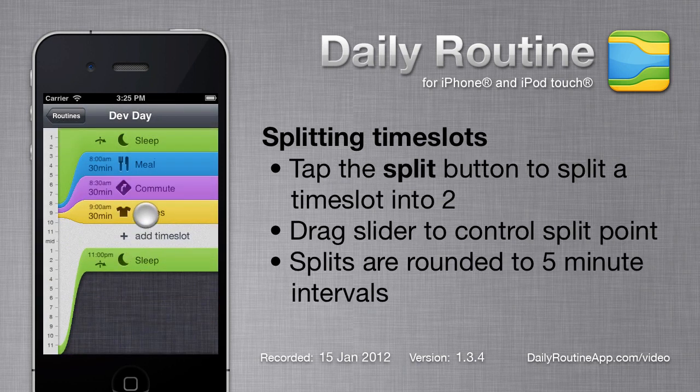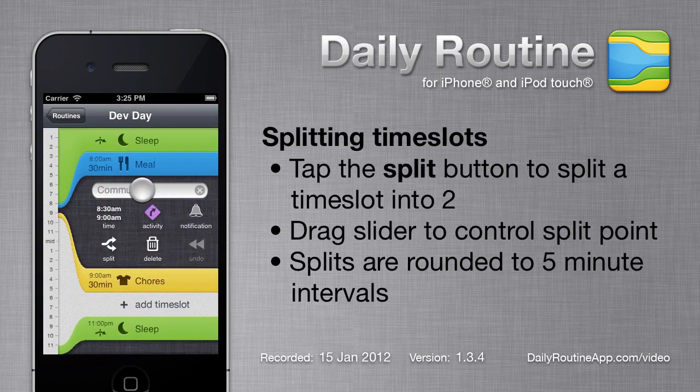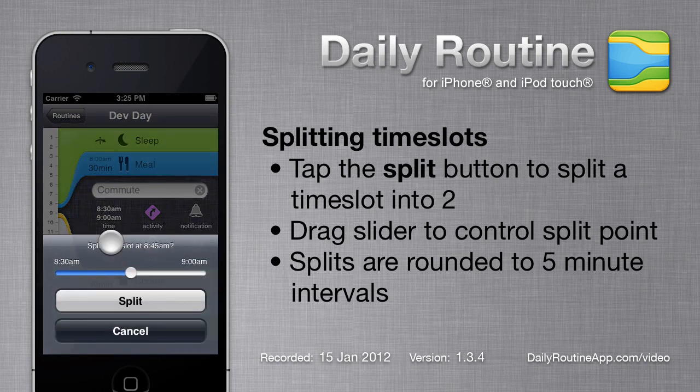Just as we can merge two timeslots into one, we can split one timeslot into two using the Split button. By default, the split will be in the middle of the timeslot, but we can change this by dragging the slider.